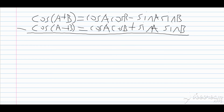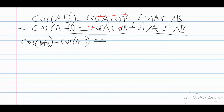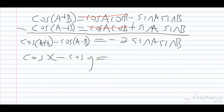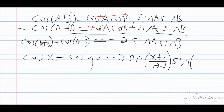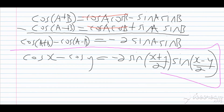Now we subtract the cosine compound angle formulas. On the left-hand side, we get cosine of A plus B minus cosine of A minus B. The cosine A cosine B terms cancel, and negative sine A sine B minus sine A sine B gives negative 2 sine A sine B. Using our substitutions A equals (X plus Y)/2 and B equals (X minus Y)/2, we get: cosine X minus cosine Y equals negative 2 sine of (X plus Y)/2 times sine of (X minus Y)/2. This is the fourth factor formula. Please stay tuned for the next video on how to apply these factor formulas.